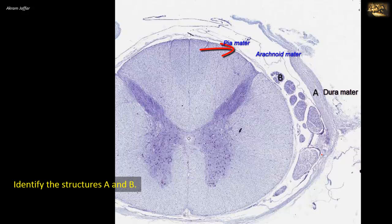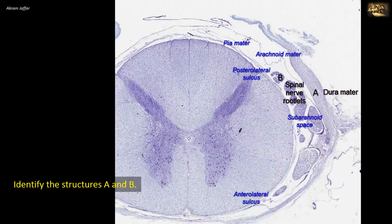In between the pia and arachnoid is the subarachnoid space, which in this section shows rootlets of spinal nerves — anterior and posterior rootlets emerging from the anterolateral and posterolateral sulci. So B is a nerve rootlet.